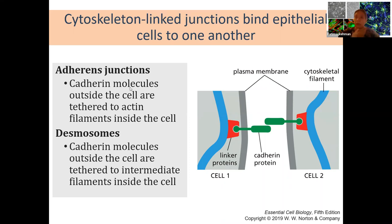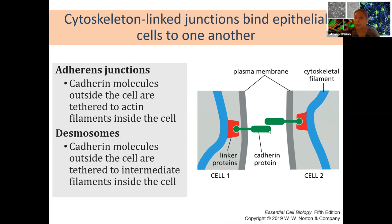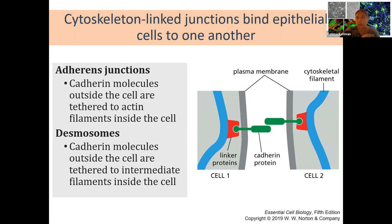The main difference between adherent junctions and desmosomes is the type of cytoskeletal structure involved. In adherent junctions, cadherin proteins in the plasma membrane interact with each other and are bound via linker proteins to actin filaments inside the cell. In desmosomes, the linker proteins are tethered to intermediate filaments instead. So it's a different type of filament, leading to different types of responses.